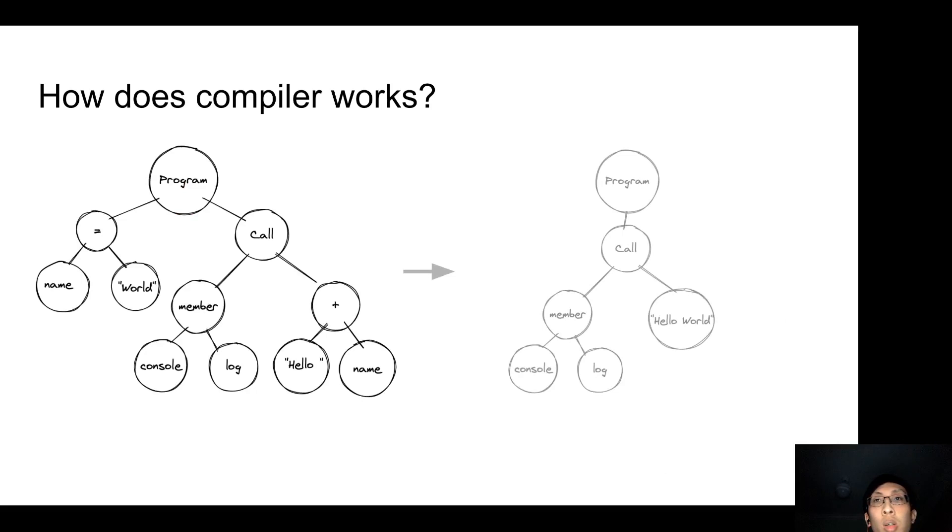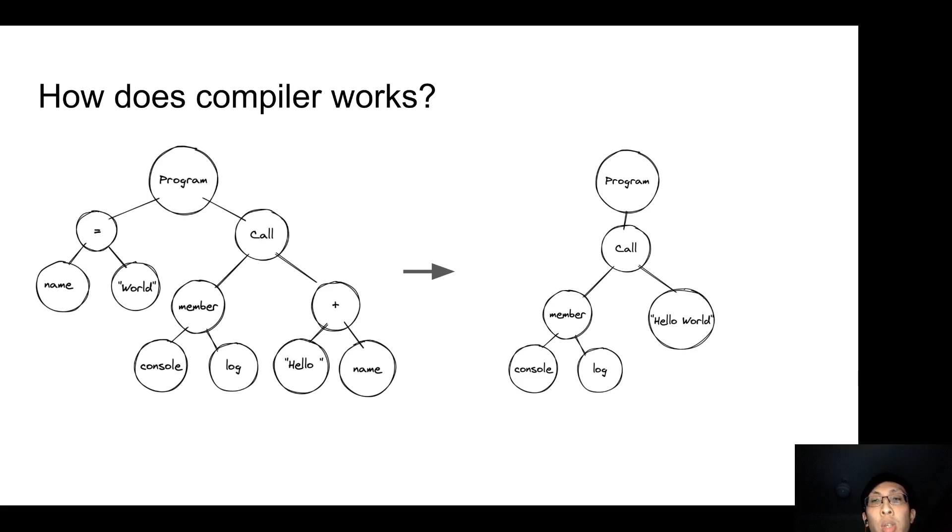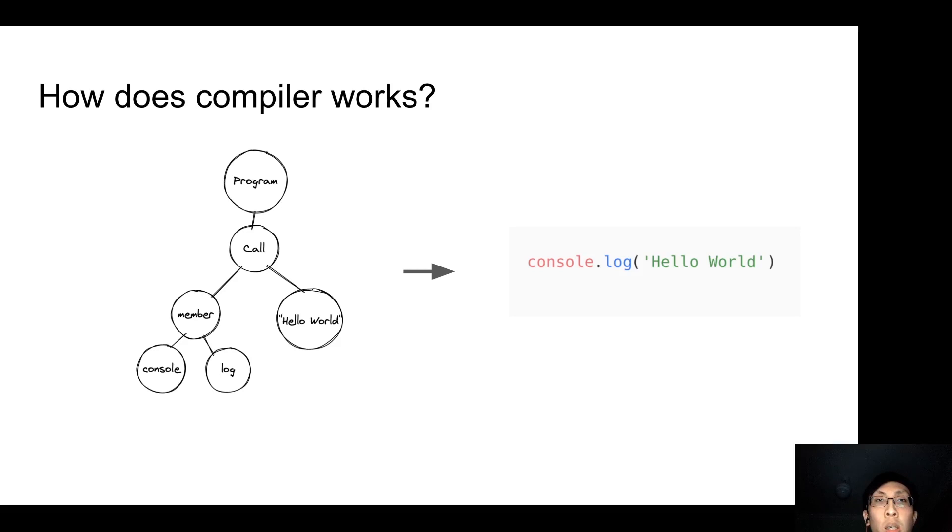And sometimes, the compiler will apply some transformation to the AST. It uses tree traversal algorithms such as depth-first search to go through every node and make transformation there. Finally, the compiler takes the AST and generates code based on the AST. In summary, a compiler is nothing but parsing source code to AST, making transformations such as optimization or transformation, and then generating code from the AST.